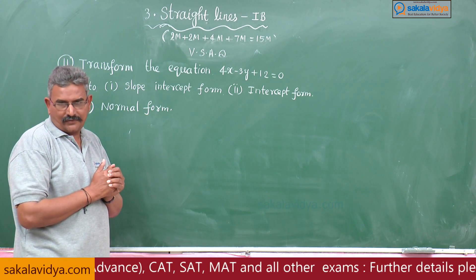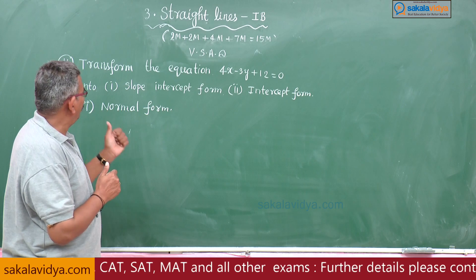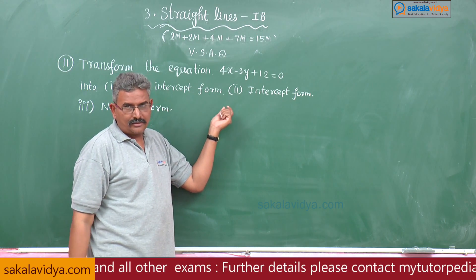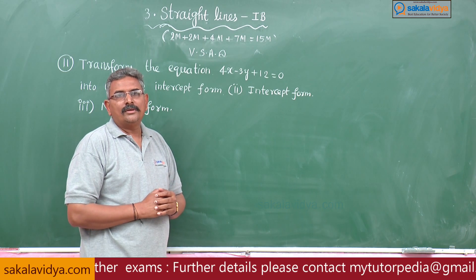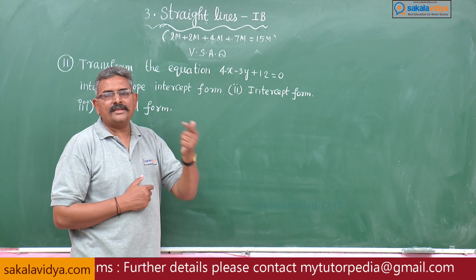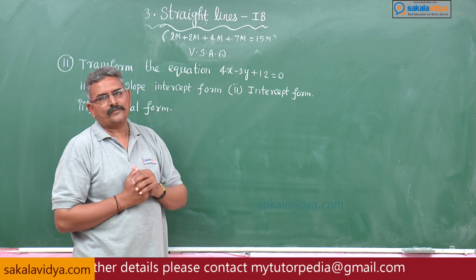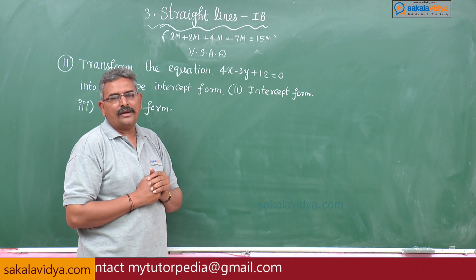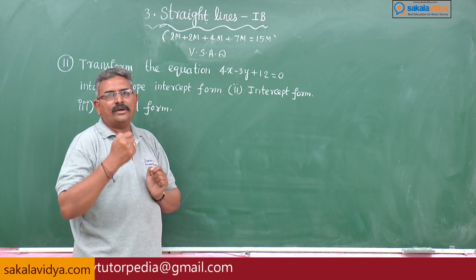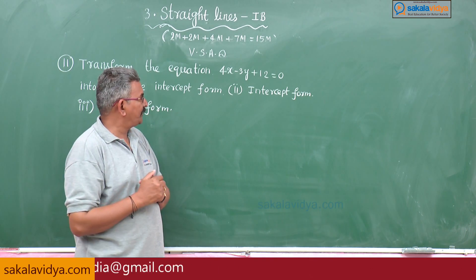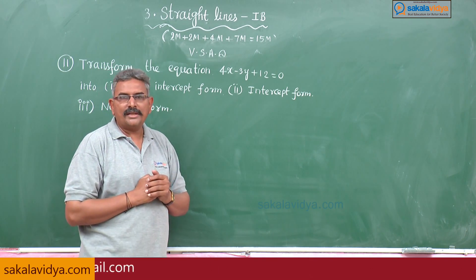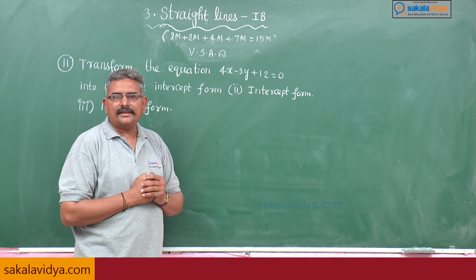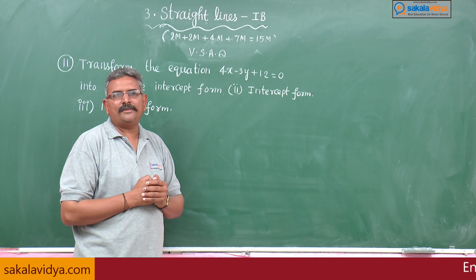Let us have a brief discussion. How to transform a general equation into the slope intercept form? Slope intercept form means y is equal to mx plus c. So we have to write 4x minus 3y plus 12 equals 0 in the form y equals mx plus c. The intercept form is x by a plus y by b equals 1.